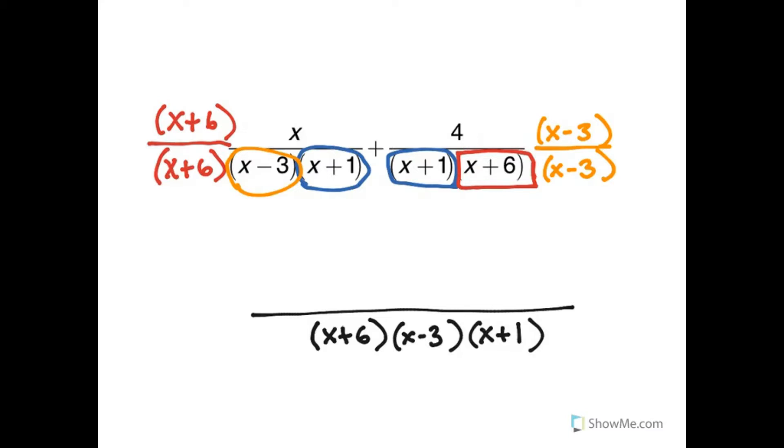And then on the top, I have x plus 6 times x. So that's, let's write it in a different order. x times x plus 6 plus, and then I have 4 times x minus 3.